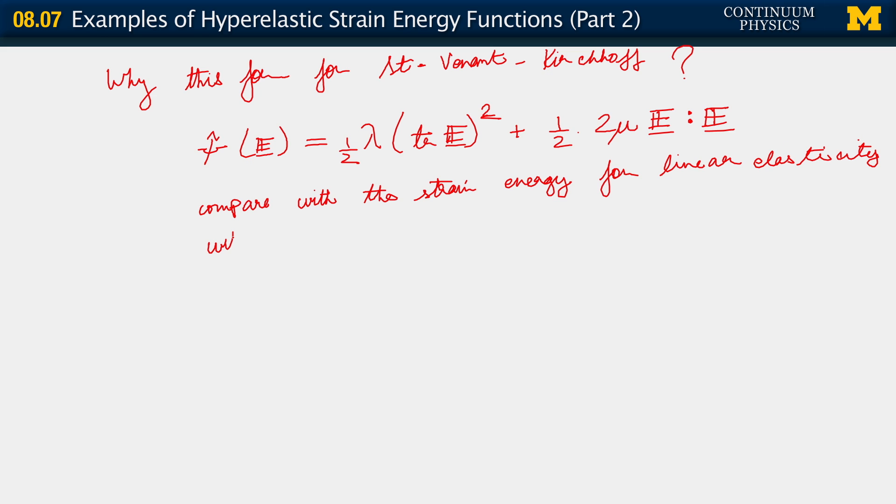With the infinitesimal strain. But the infinitesimal strain is denoted ε, and it is just one-half of the displacement gradient plus its own transpose.